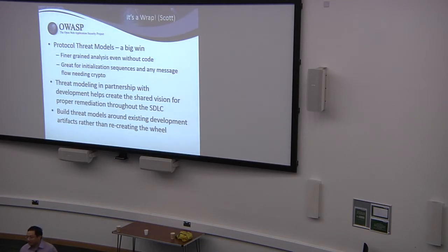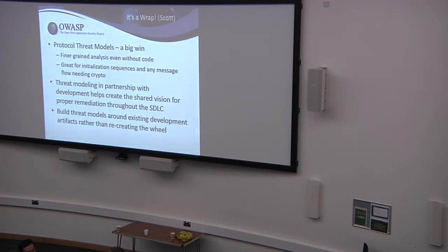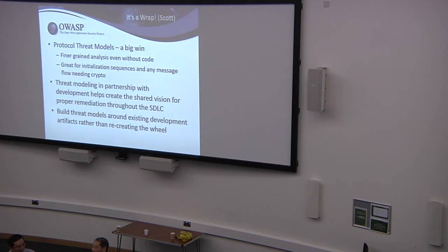Q: You said you don't put threats in your threat table where you already have controls. Do you keep track of that somewhere else? A: Yes, we keep track of it in the threat model document — specifically the missing or weak controls — and also in a workflow system like JIRA, where it becomes a technical debt requirement for dev teams. We also have what we call a traceability matrix, which is really about residual risk. The reason we don't put things where the control is sufficient is because that table goes to development, and development says 'I got it, I'm good here' — it's not going into the bug tracking system.